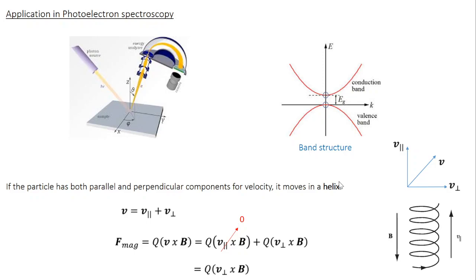That is about cyclotron motion. In the next class, we will see what happens when, in addition to a magnetic field, we also have an electric field — how does the motion of the charged particle change? Stay tuned for that. Thank you.